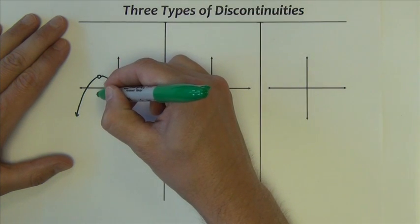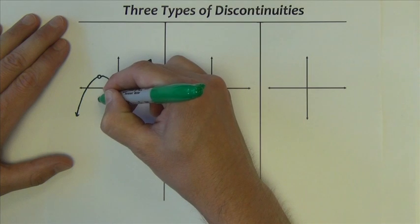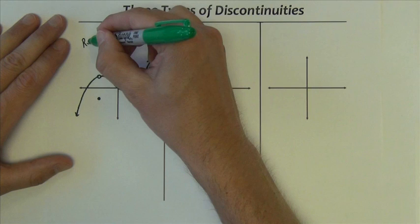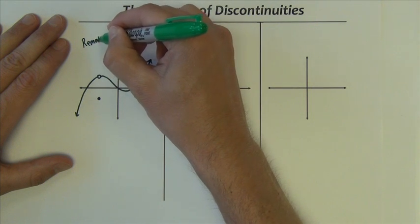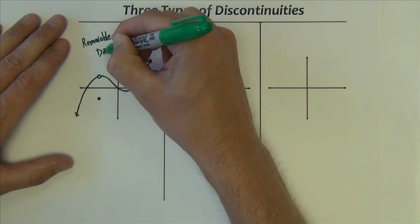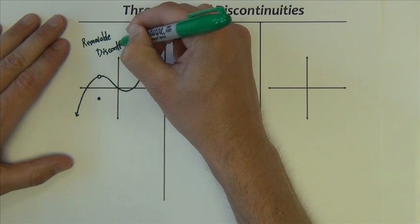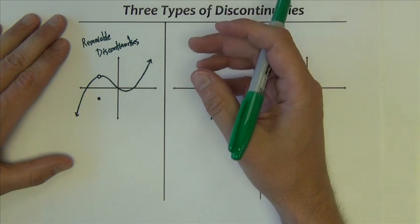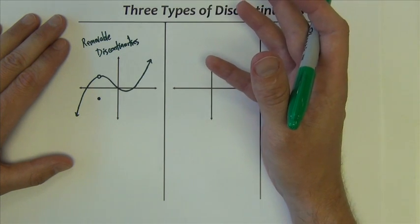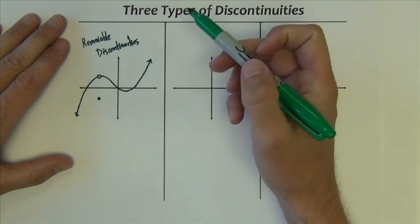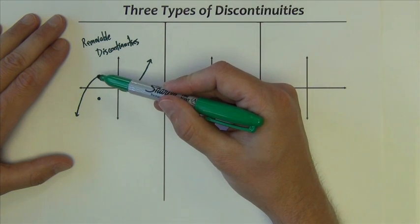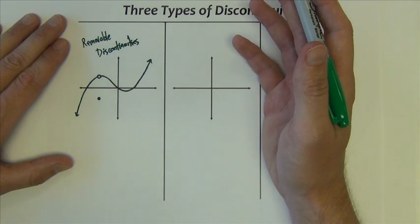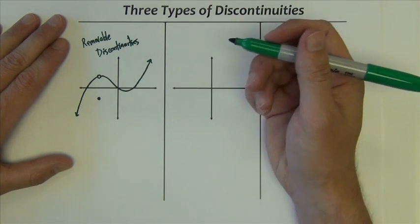And sometimes it's even defined—maybe I put a solid point right here. That point can be there, not be there, it doesn't really matter. These are called removable discontinuities. They're called removable because we can remove them. Sometimes it's possible to redefine the function at this particular x value so that we fill in or plug the hole, fill in the gap or fix it.